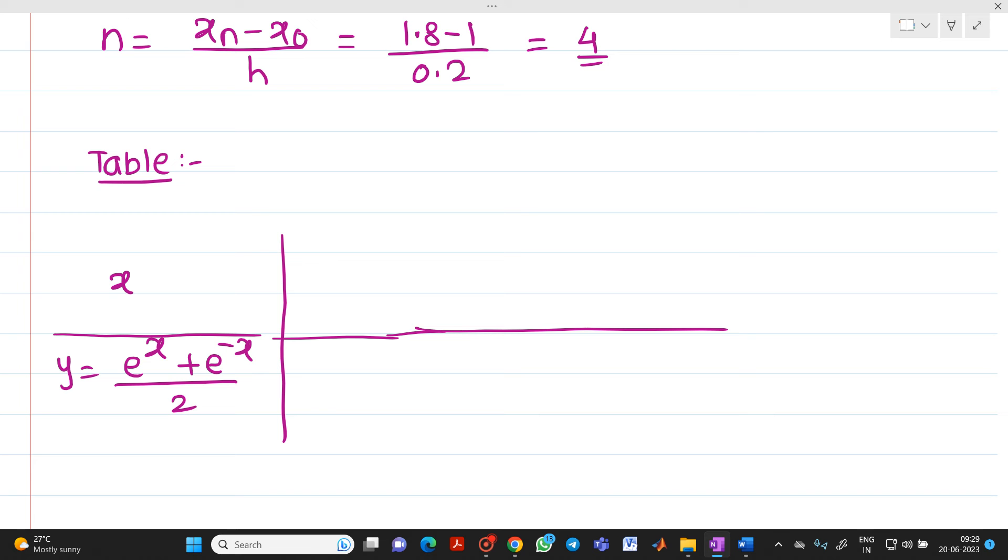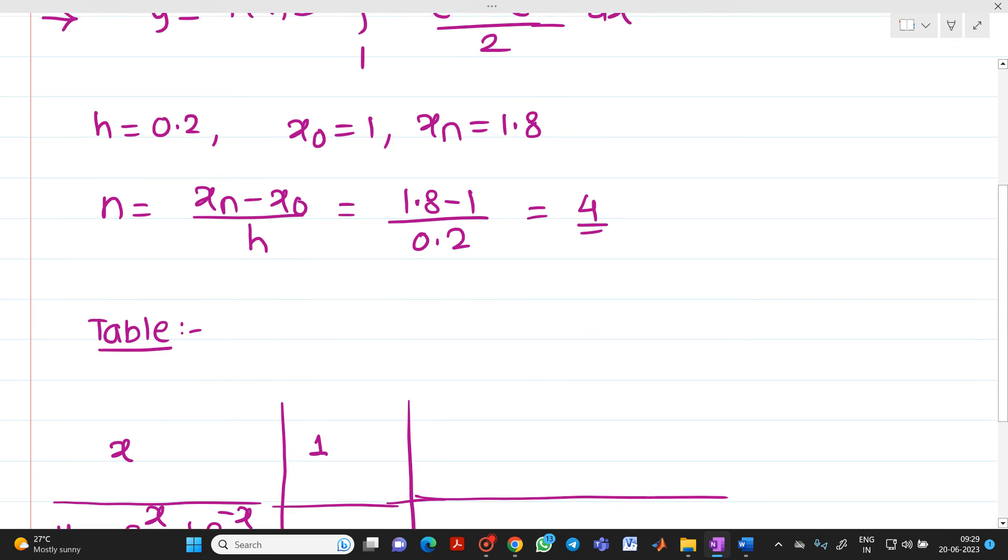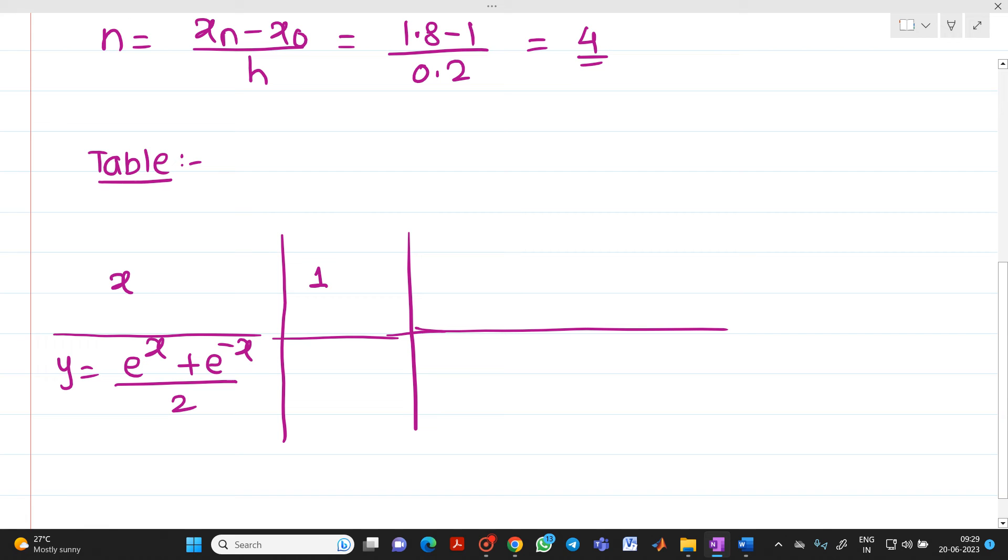First value, it starts from 1. So, we will write it here as 1. Now, what is h? h is 0.2. So, next value will be 1 plus 0.2 is 1.2. This will be x0. x1, it will be equal to x0 plus h. x2 will be equal to x1 plus h. That is 1.2 plus 0.2, you will get it as 1.4.